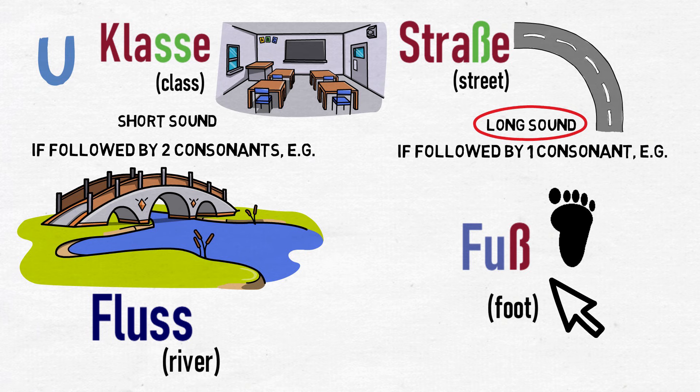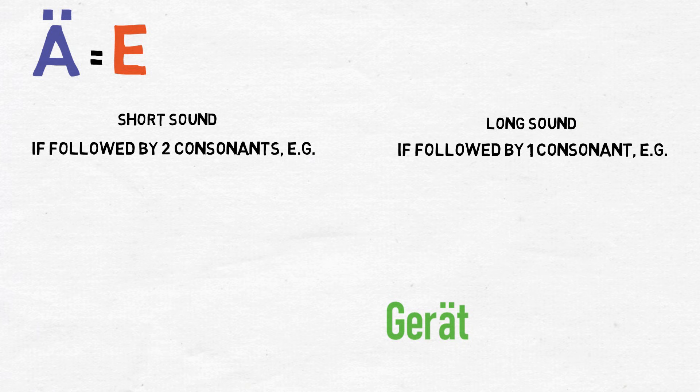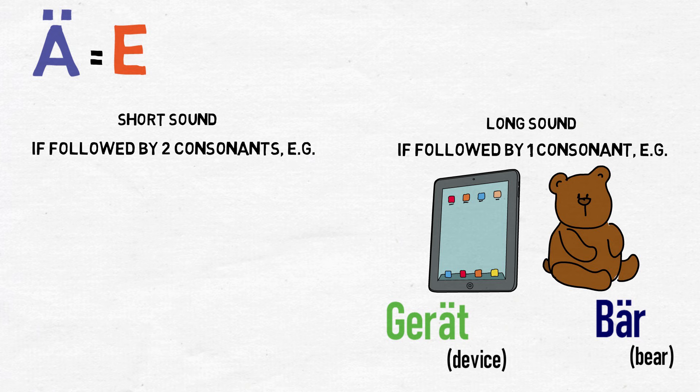The A-umlaut, Ä, tends to make a very similar sound to the E, and for beginners I would recommend treating these as the same sound. For example, Gerät with a long Ä, meaning device, or Bär, meaning bear, as opposed to Geschäft with a short Ä, meaning shop.